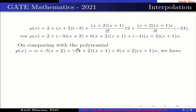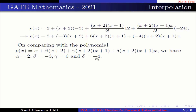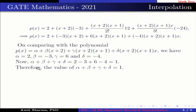Comparing with P(x) = α + β(x+2) + γ(x+2)(x+1) + δ(x+2)(x+1)(x), we have α = 2, β = -3, γ = 6, and δ = -4. Therefore α + β + γ + δ = 2 - 3 + 6 - 4 = 1.